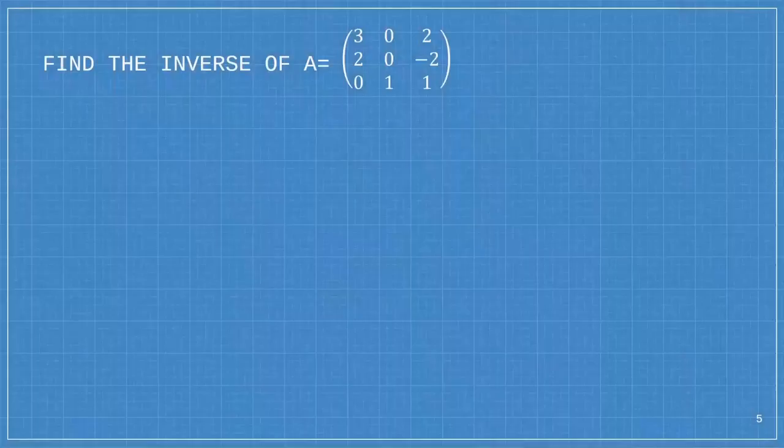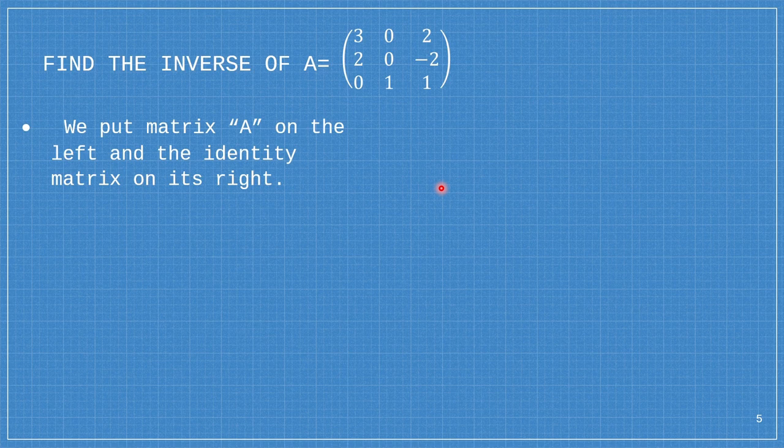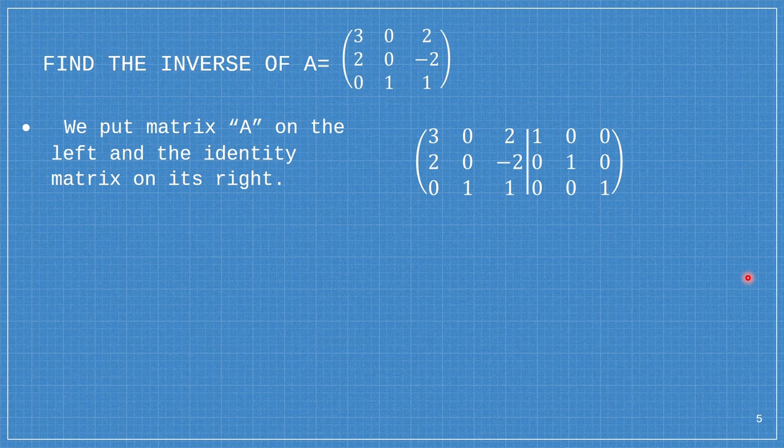Next, we're going to find the inverse of A. Our first step is to put matrix A on the left and the identity matrix on the right. Next, we're going to do several elementary row operations.